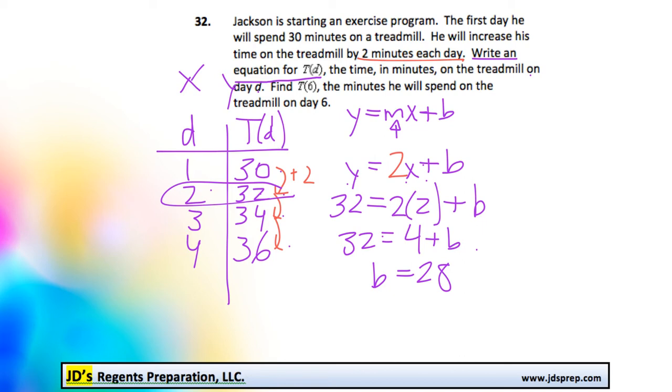So our actual equation for T of D is going to be 2 times, not x, but d plus 28. Okay, so that's the first part of this problem solved.